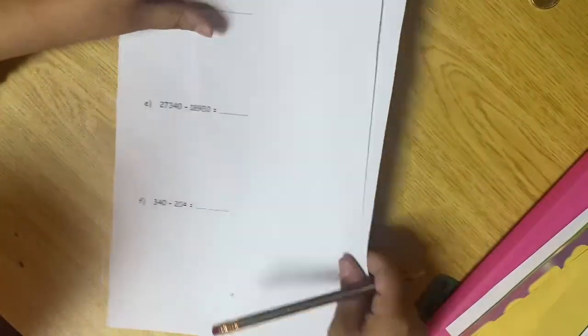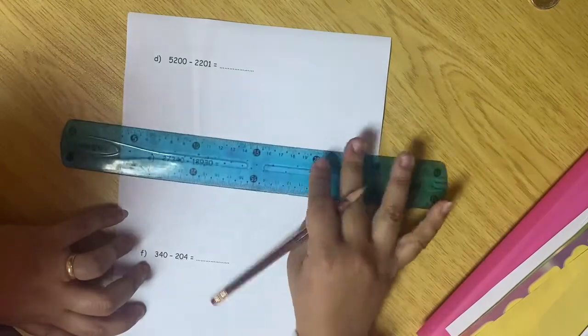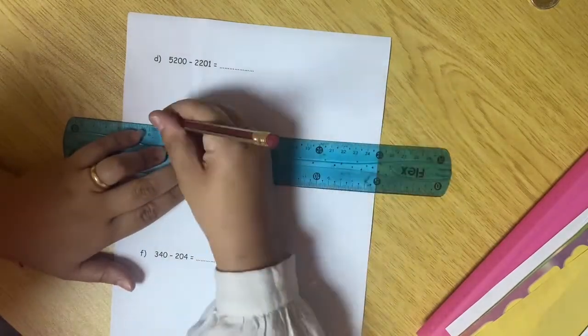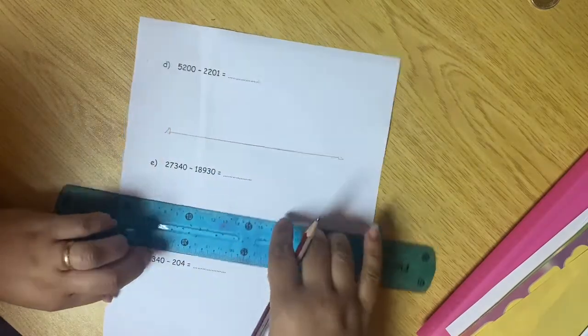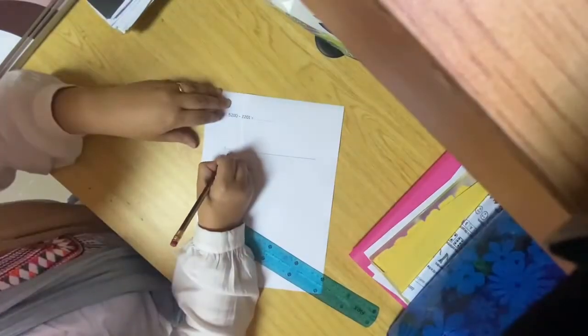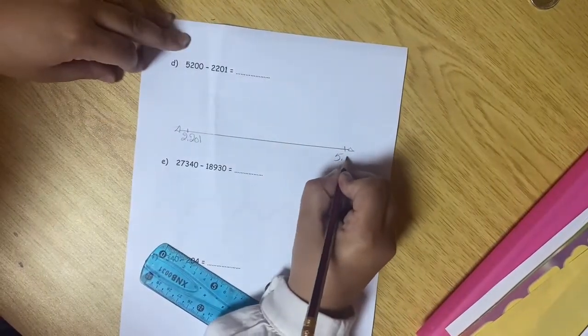Here, the next page, page 19. I will draw my number line. And here, I will put the two numbers on the number line. 2,201, and at the end, 5,200.